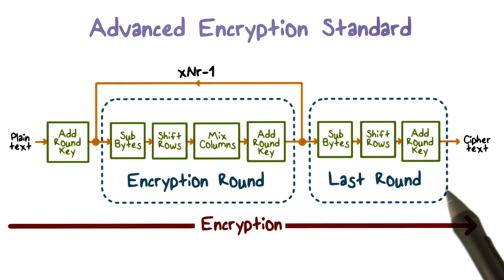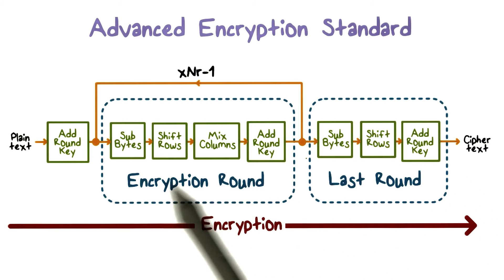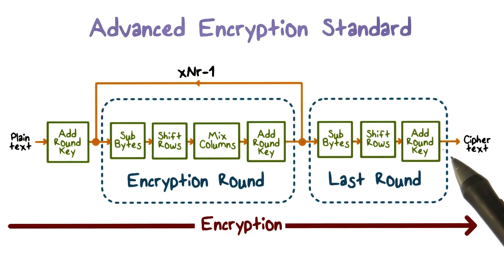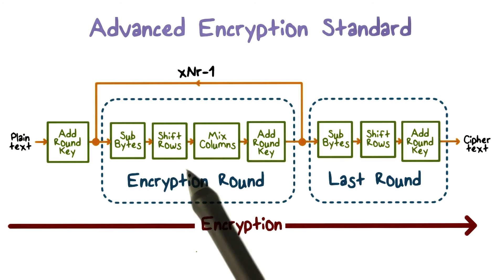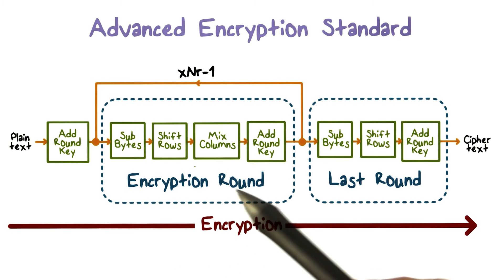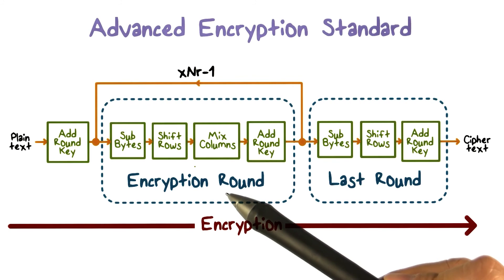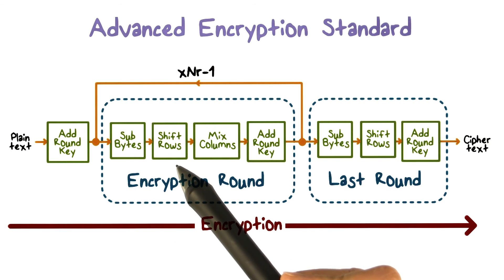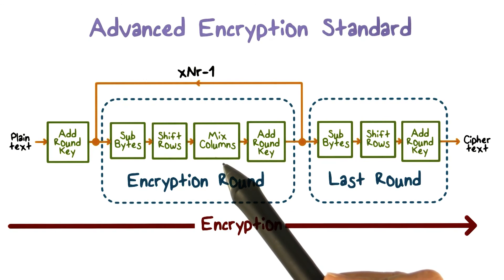In AES, the decryption process runs the algorithm in the reverse direction. This means that each of these operations must be reversible. Adding round key involves the XOR operation, and the XOR operation by itself is reversible. For the other operations — substitute bytes, shift rows, and mix columns — an inverse function is used in the decryption algorithm. By using this inverse function, we can reverse the action of substitute bytes that was performed in encryption. Likewise, we can reverse the effects of shift rows and mix columns in the decryption process.